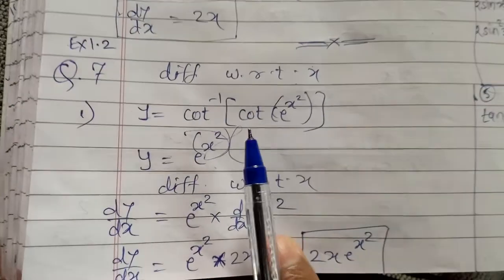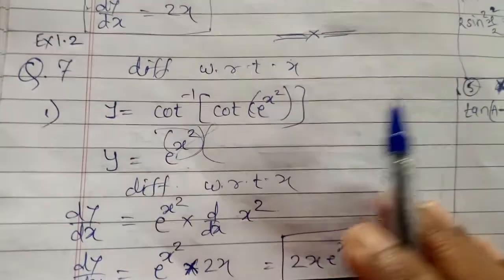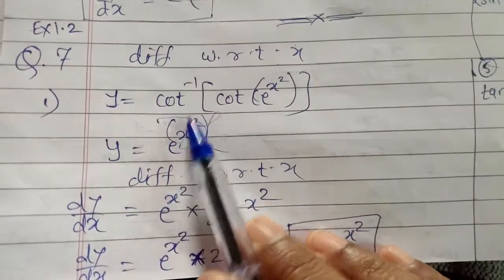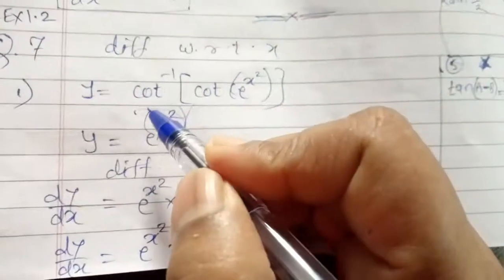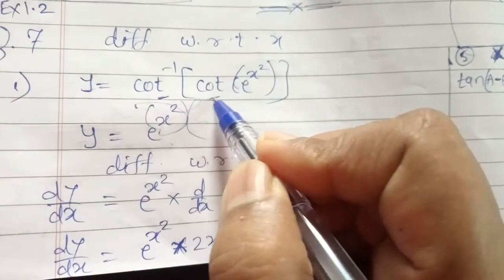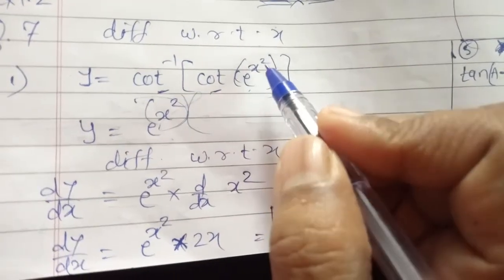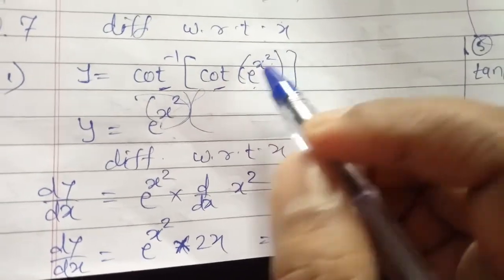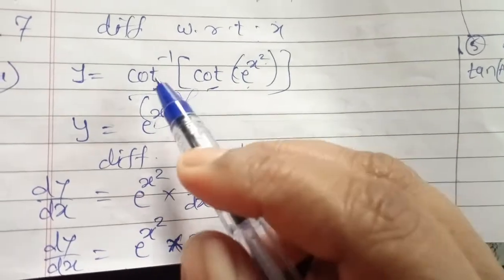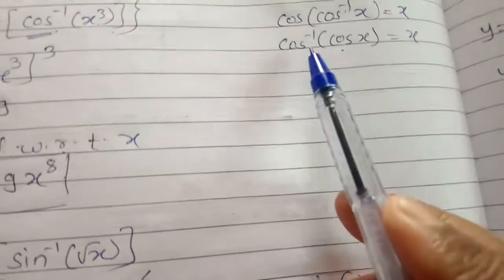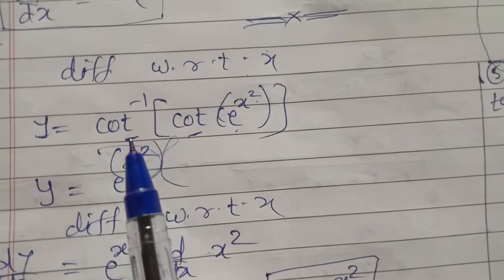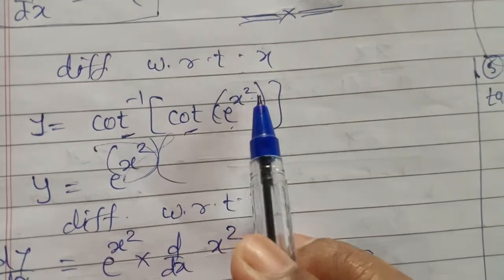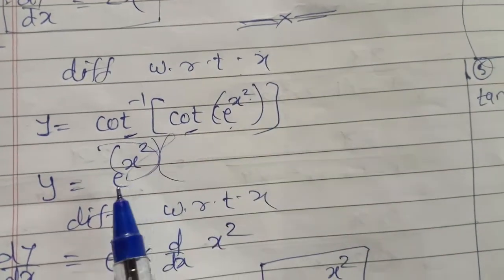Composite functions are also included. See the first one: cos inverse of cos(e raised to x square). Here outside is cos and inside is also cos, so the answer is e raised to x square. Similarly, for all ratios we can use this — cot inverse of cot(e raised to x square), so the answer is e raised to x square.